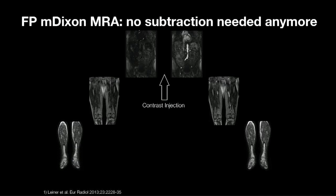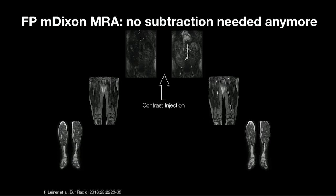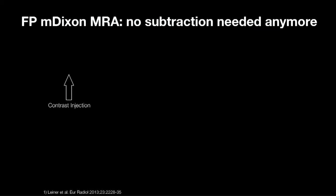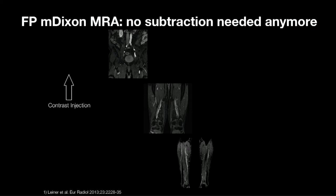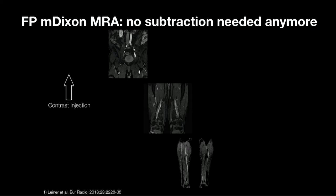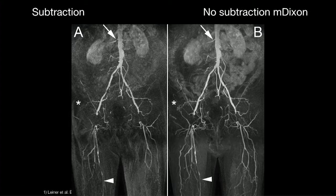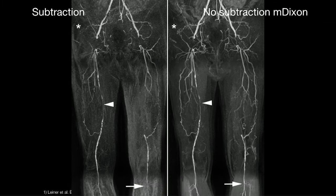But what if you don't use subtraction anymore? Tim's group have been working on removing mask images. If you don't need those mask images, you need some kind of intrinsic fat suppression in your sequence. Tim's group have published work using a Dixon approach to fat suppression. You still get a little bit of anatomy — which surgeons like — but you get much better overview images of the whole arterial tree and eliminate some of the misregistration artefacts seen with standard subtraction.